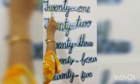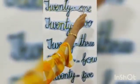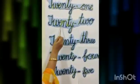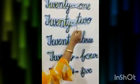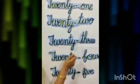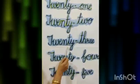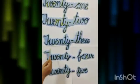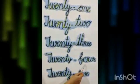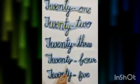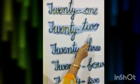First is 21: T-W-E-N-T-Y O-N-E. Next is 22: T-W-E-N-T-Y T-W-O. Next is 23: T-W-E-N-T-Y T-H-R-E-E. Next is 24: T-W-E-N-T-Y F-O-U-R. Next is 25: T-W-E-N-T-Y F-I-V-E. Now we will write these number names in our notebook.